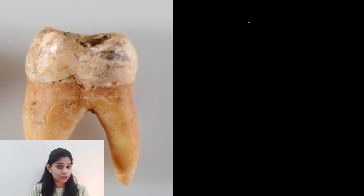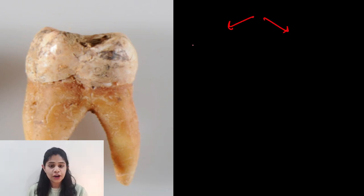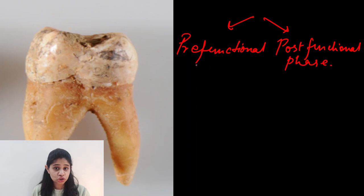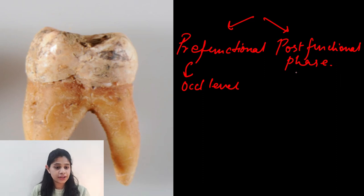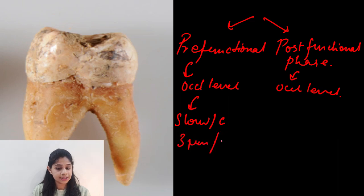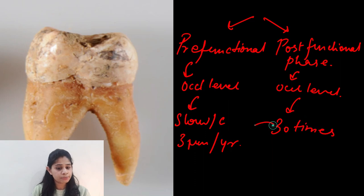The deposition of cementum occurs in two phases. The first phase is the pre-functional phase and the second phase is the post-functional phase. The pre-functional phase is deposition of cementoid tissue which occurs before the tooth reaches the occlusal level, whereas in the post-functional phase cementum deposition occurs after the tooth reaches the occlusal level. In the pre-functional phase, cementum is deposited at a slow but constant rate of about 3 µm per year, whereas in the post-functional phase, deposition occurs 30 times faster.